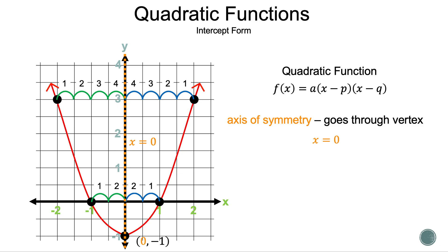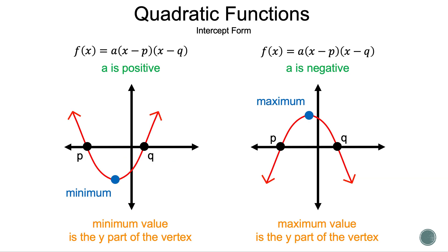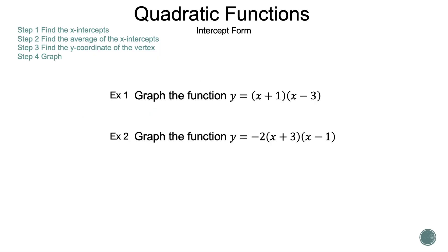The vertex can be a minimum or maximum point — in this case we have a minimum at (0, −1). When a is positive, we have a U shape since all output values will be positive, so the graph goes up and there will be a minimum value, which is the y-part of the vertex. If a is negative, we have an upside-down U since all output values will be negative, so the graph goes down and there will be a maximum value, which is the y-part of the vertex.